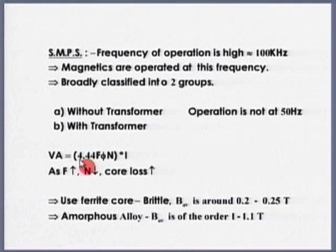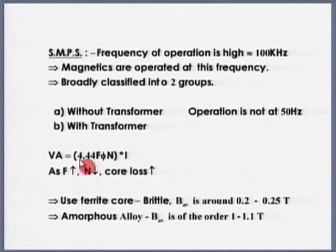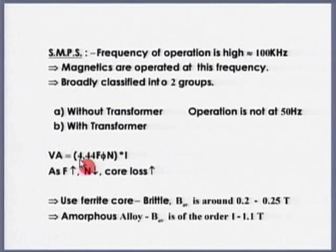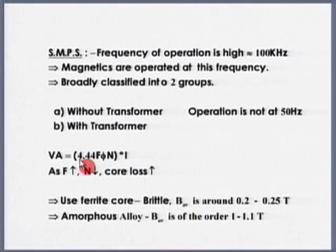The problem with the ferrite core is that it is very brittle and the operating flux is very low — of the order of around 0.2 tesla. Of course, amorphous alloy cores are also now available, with average B of the order of 1.1 tesla. These two cores are popularly used in DC to DC conversion.